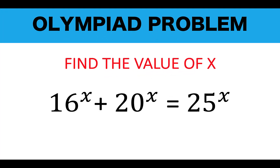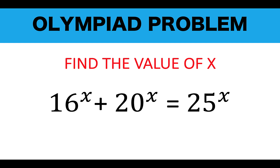Hi guys, here's our math problem for today. Find the value of x given the equation 16 raised to x plus 20 raised to x is equal to 25 raised to x. This is a difficult equation to solve because, number one, the variable is in the exponent, and number two, the root of this equation is an irrational number. But I'm going to show you the technique on how to solve this problem.